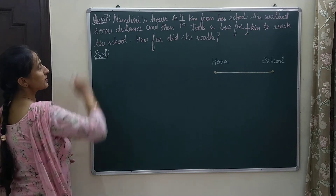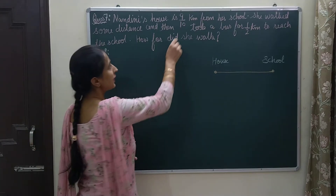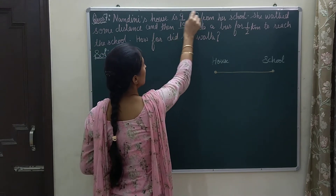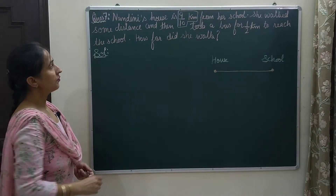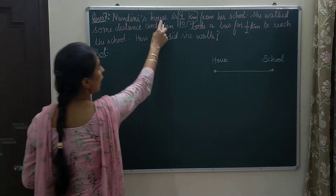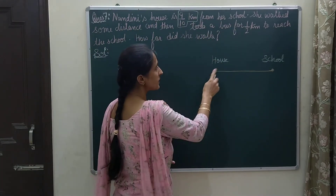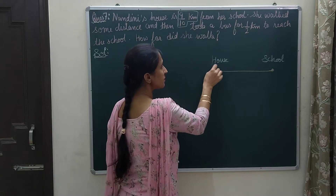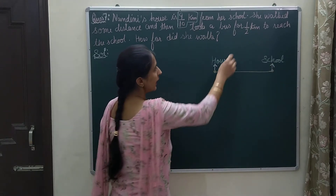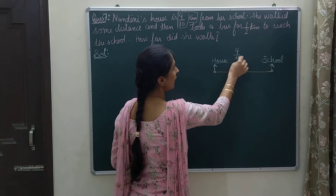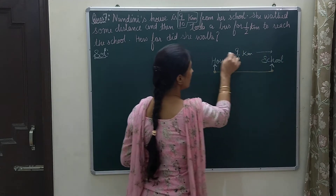Here is question number 7. Nandini's house is 9 by 10 kilometers from her school. We are given that the distance between the house and school is 9 by 10 kilometers in total.